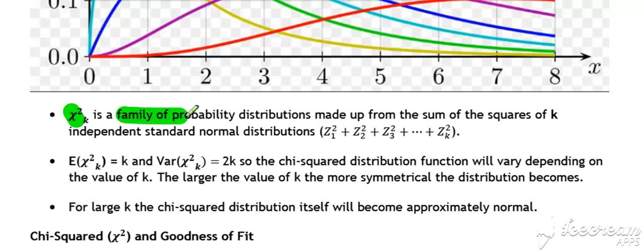The chi-squared distribution is a family of probability distributions, like the normal distribution. It is made up from the sum of the squares of a set number, say k, of independent standard normal distributions. So it's basically the sum of a number of different z standard normals squared. That's the definition of what the chi-squared distribution is.